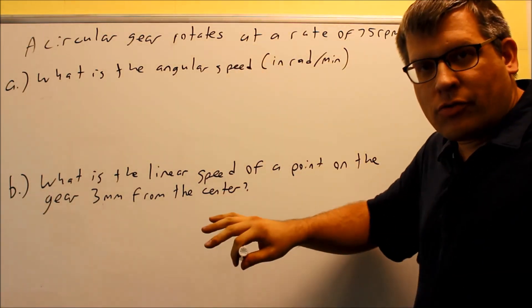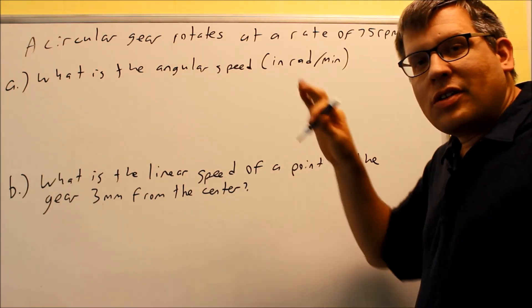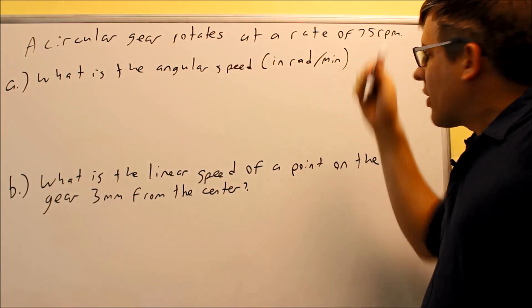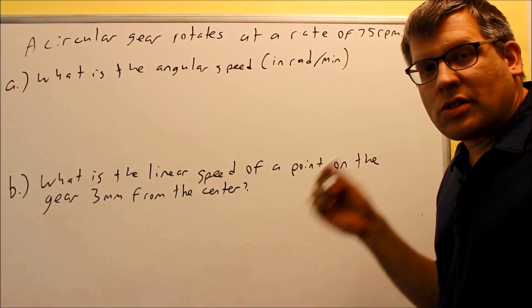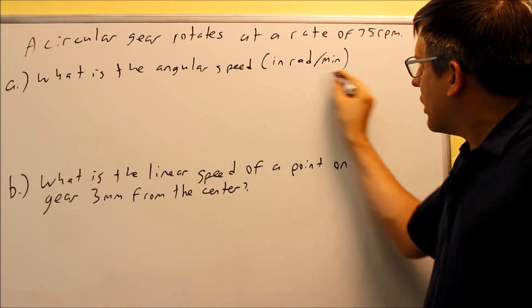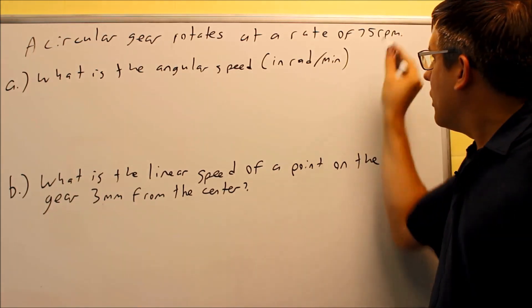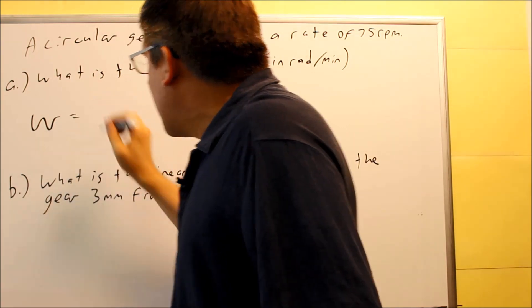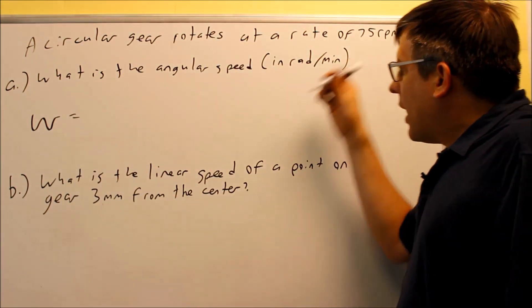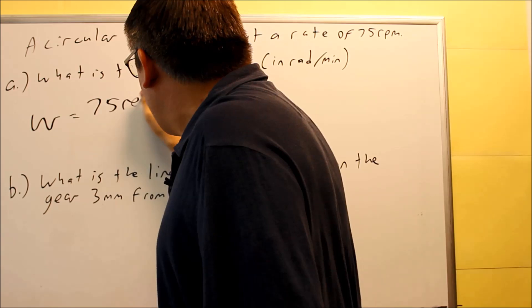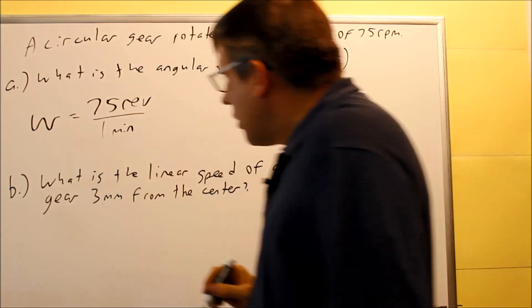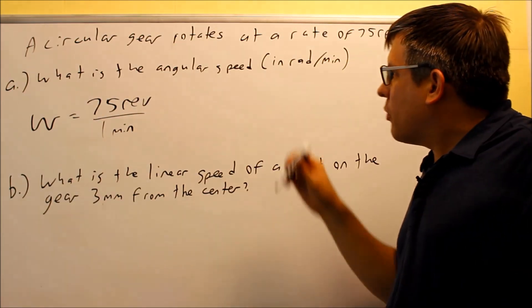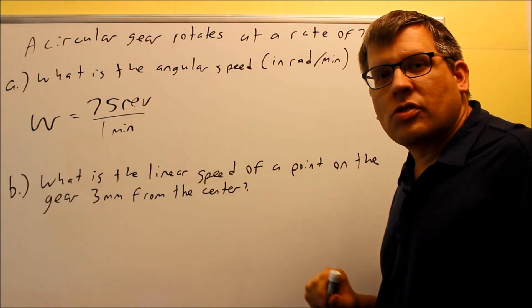Now let's look at some examples using angular speed and linear speed. A circle gear rotates at 75 RPM. That's a type of angular speed, but it's in the wrong unit — we want radians per minute, not revolutions per minute. So omega starts as 75 revolutions per one minute, and we need to convert revolutions into radians.